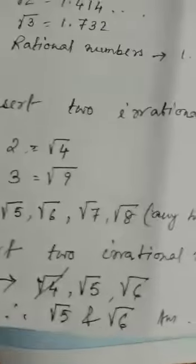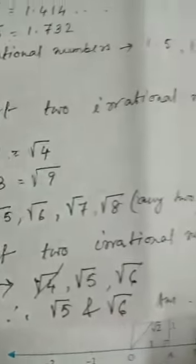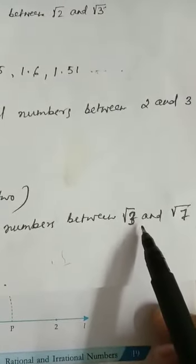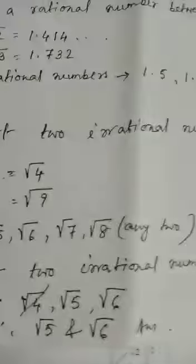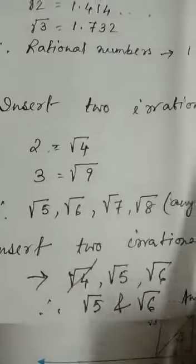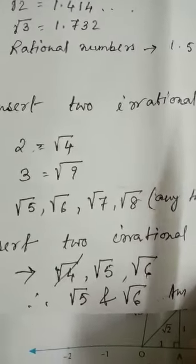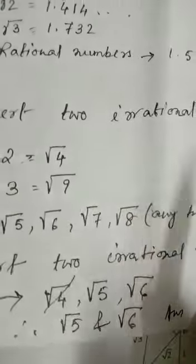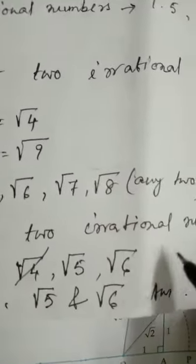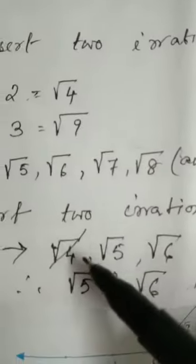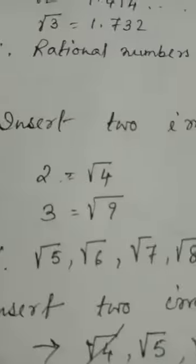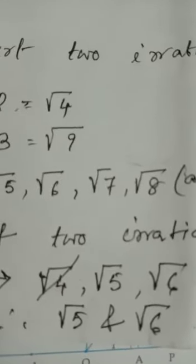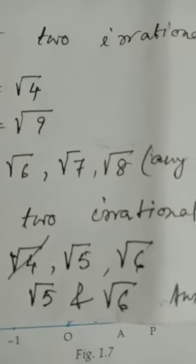I have taken last number 17: insert two irrational numbers between root 3 and root 7. Here again, between root 3 and root 7 you are getting three numbers: root 4, root 5, root 6. But root 4 is not an irrational number, because root 4 is equal to 2. So you can take two numbers: root 5 and root 6.